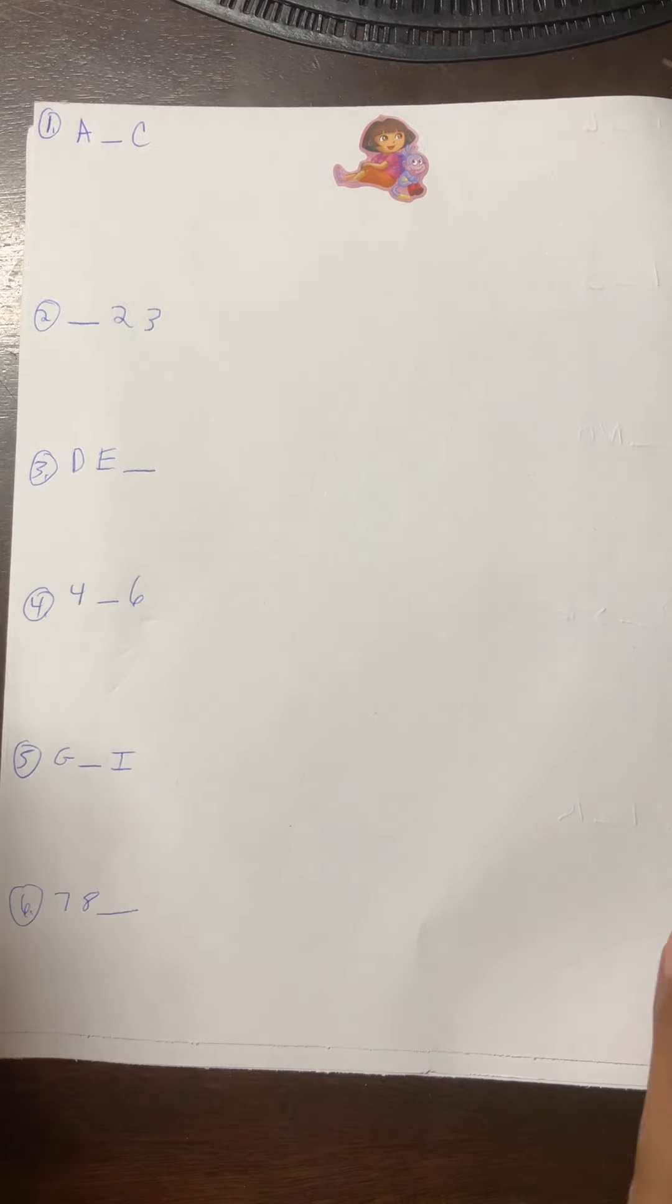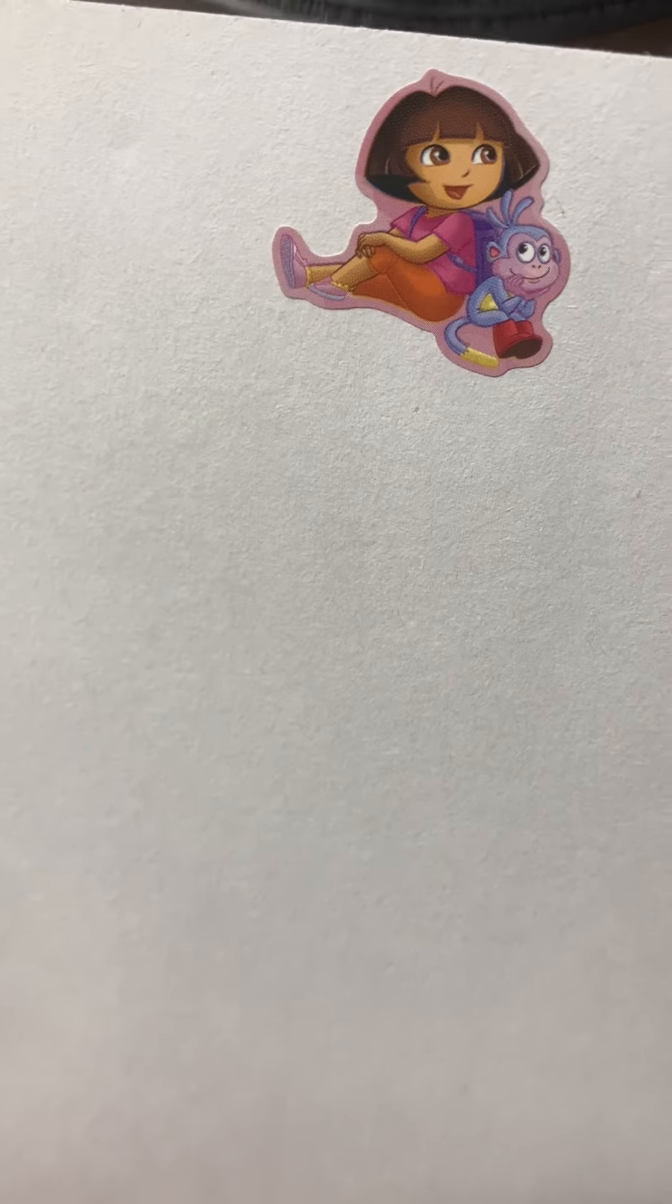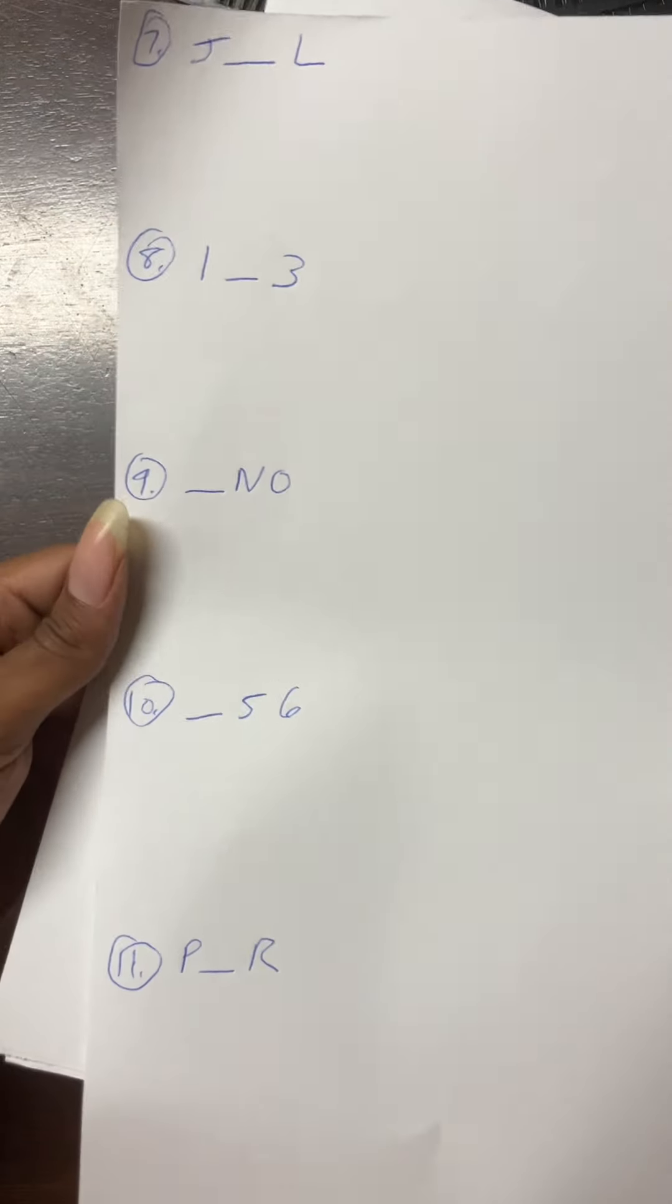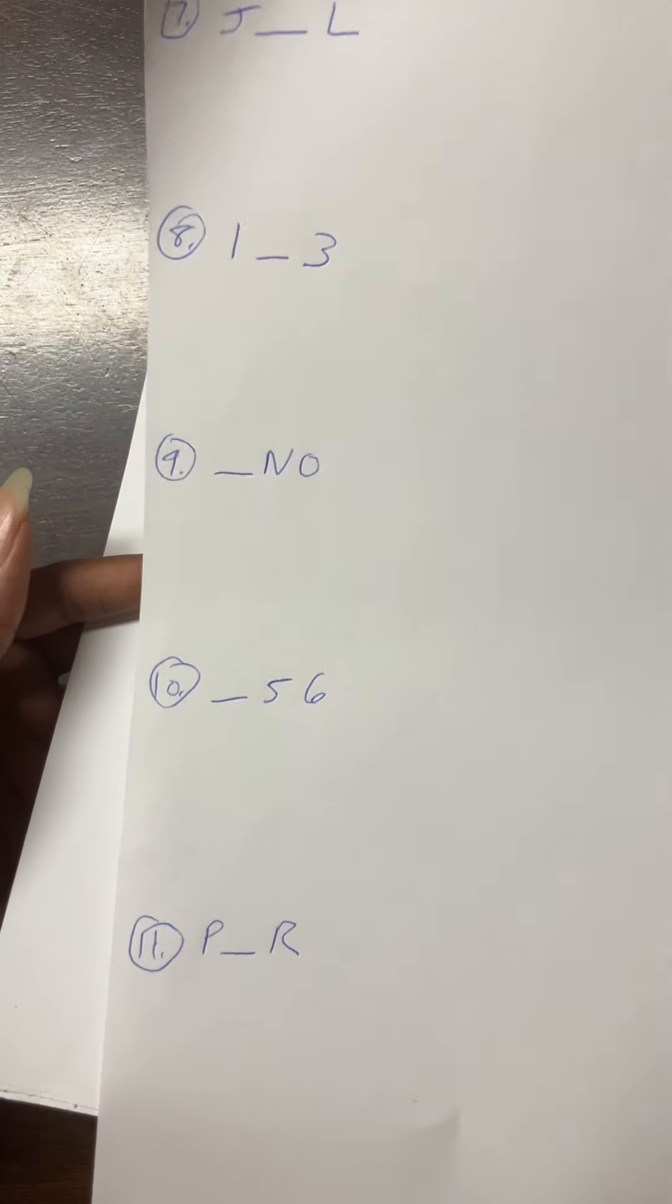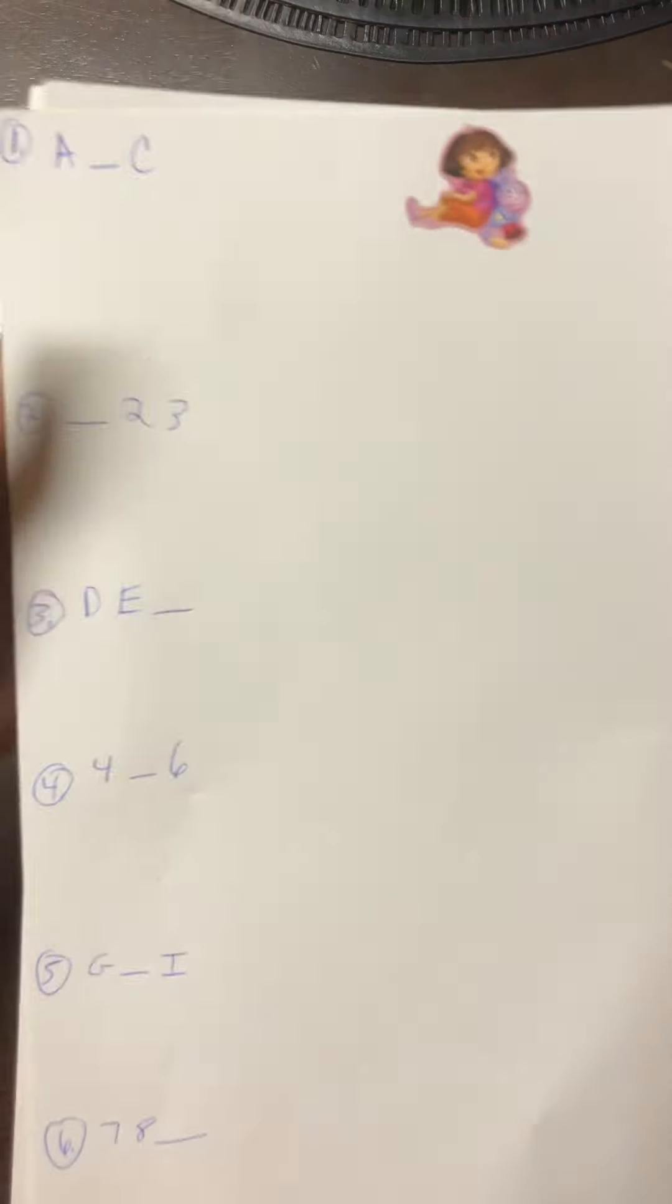Hey y'all, welcome back to another video. Today we're doing another activity worksheet and we're gonna be using the Dora and Boots sticker instead of Bluey this time. We got six problems on the front and five on the back, 11 total. This time instead of just doing ABC or 123, we're doing both.